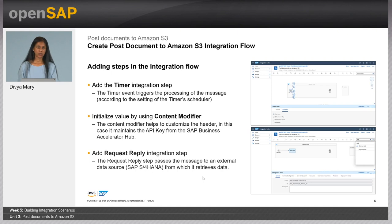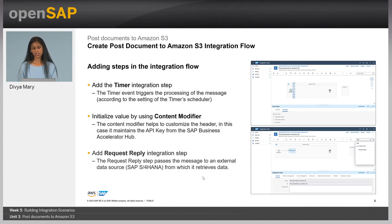The first step that we would be using is called a timer job. Using the timer job, you can schedule an integration flow to run at a specific time of the day, to run once, or you can even have advanced operations defined. The next thing we'll be using is another step called a content modifier. Using the content modifier, you can set up the message headers, the payload, or even read information from the incoming messages. You can even set message properties that you can use within your integration flows.